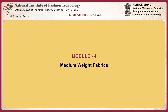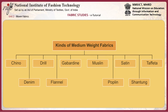Medium weight fabrics weigh from 4 to 6 ounces per square yard. They are the most widely used woven fabrics, used to make heavy shirts, blouses, dresses, apparel linings, winter bed sheets, draperies, upholstery, wall coverings and table linen. They are also used as quilted and bonded fabrics. These are the different kinds of medium weight fabrics.